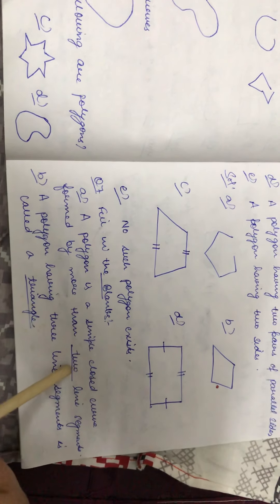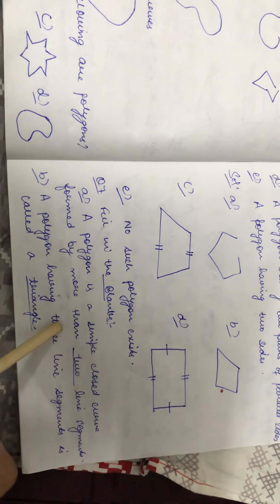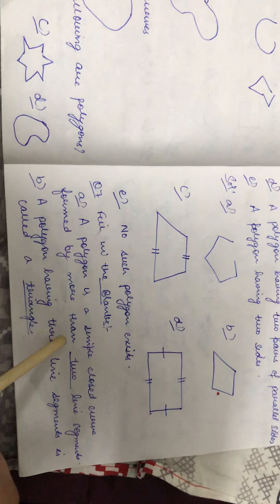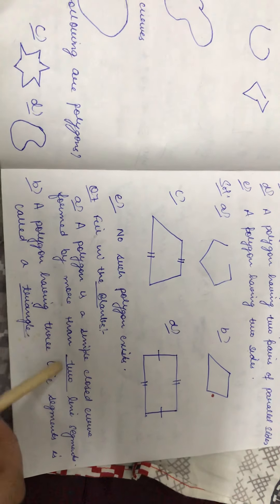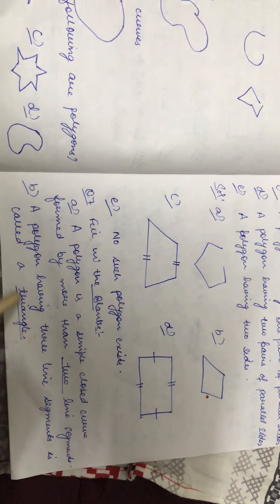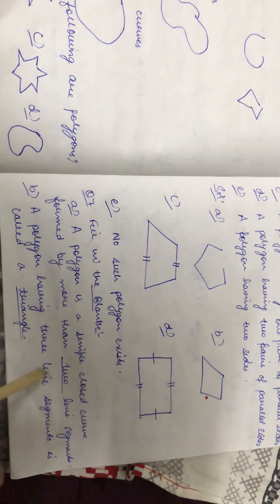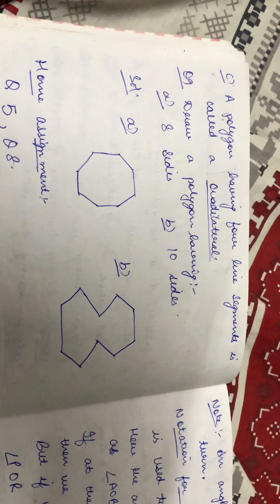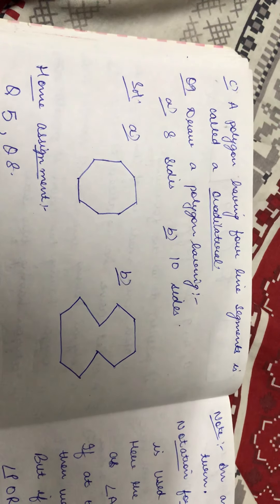Next question is fill in the blanks. A part: a polygon is a simple closed curve formed by more than blank line segments. We know a polygon is made up of at least three line segments, so it should be more than two. A polygon having three line segments is called a triangle. A polygon having four line segments is called a quadrilateral.